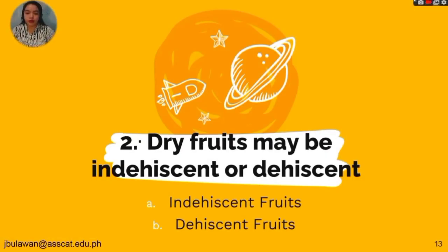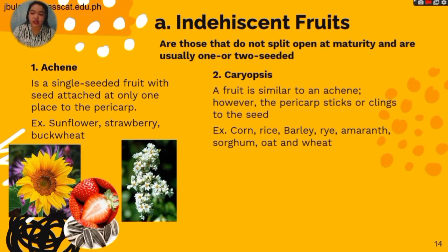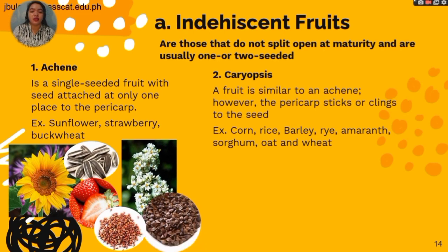Now let's go to dry fruits, which may be indehiscent or dehiscent. First, the indehiscent fruits are those that do not split open at maturity and are usually one or two seeded. First, we have the achene, which is a single-seeded fruit with the seed attached at only one place to the pericarp. Examples are sunflower seeds, strawberry seeds, and buckwheat seeds.